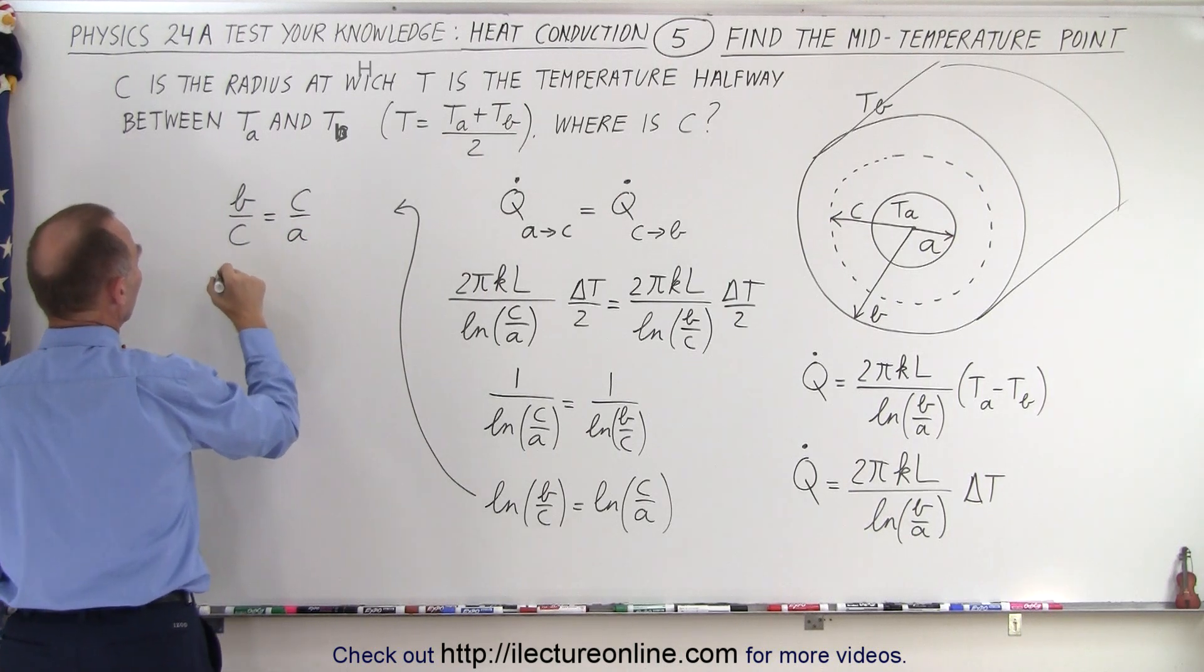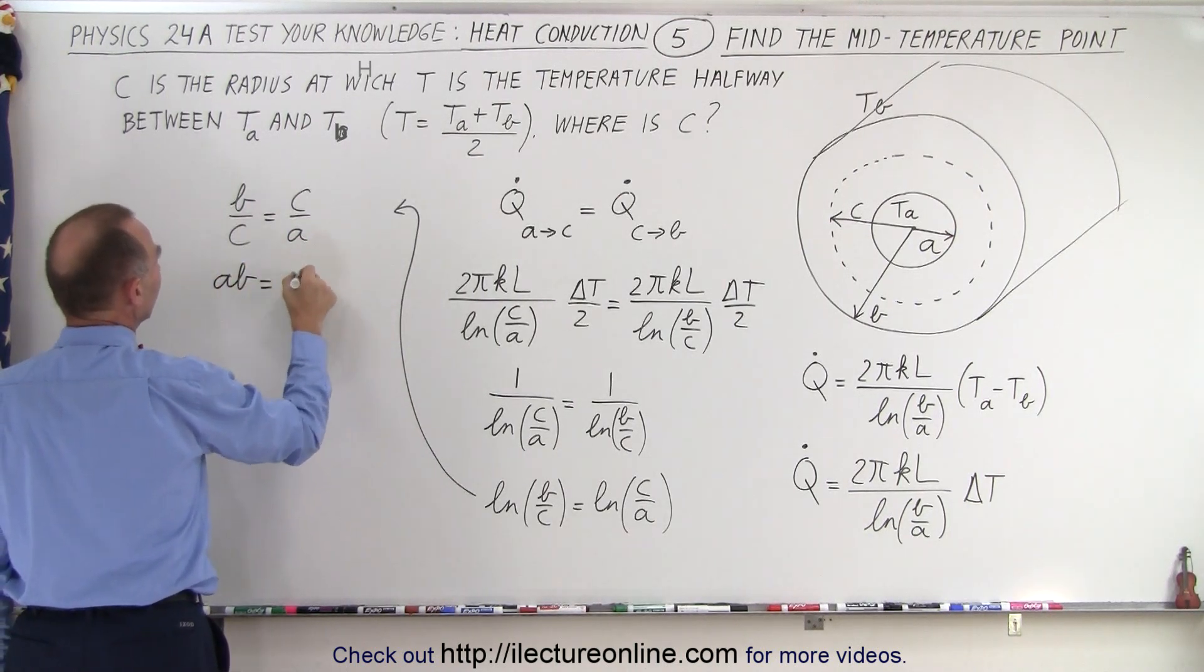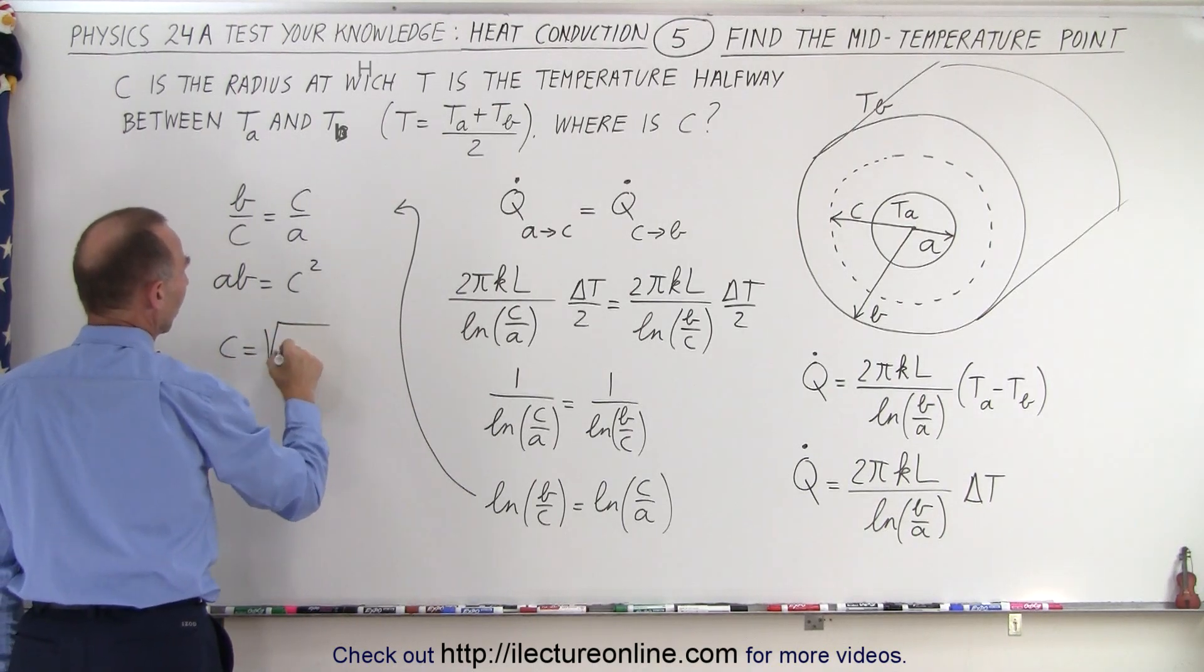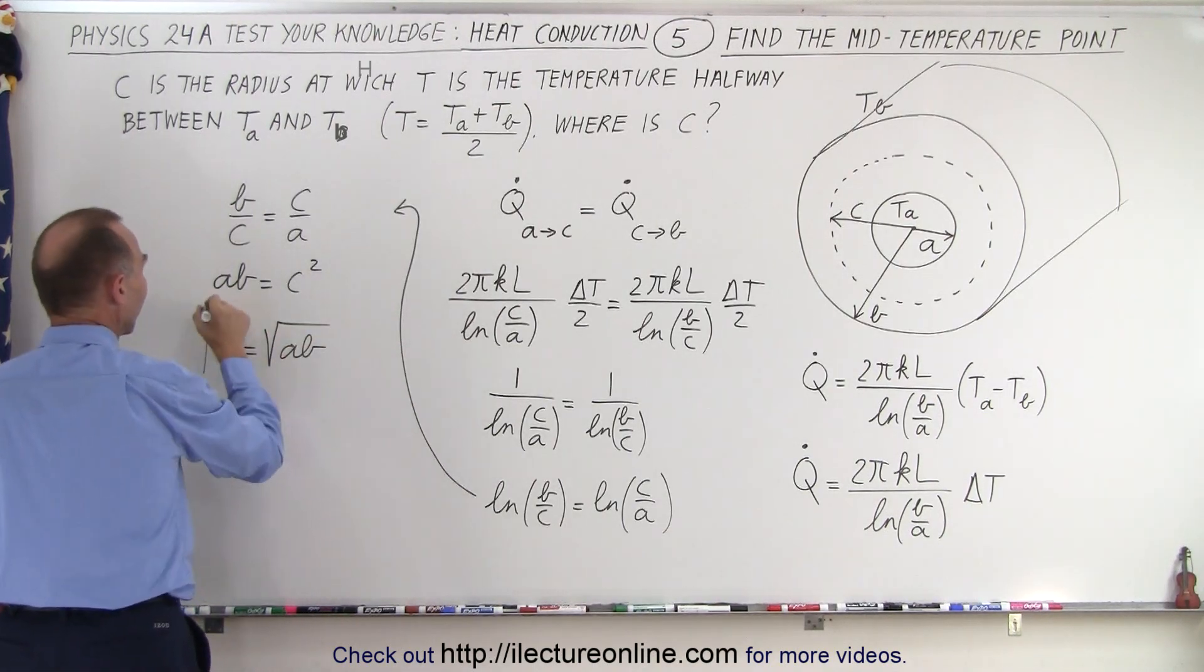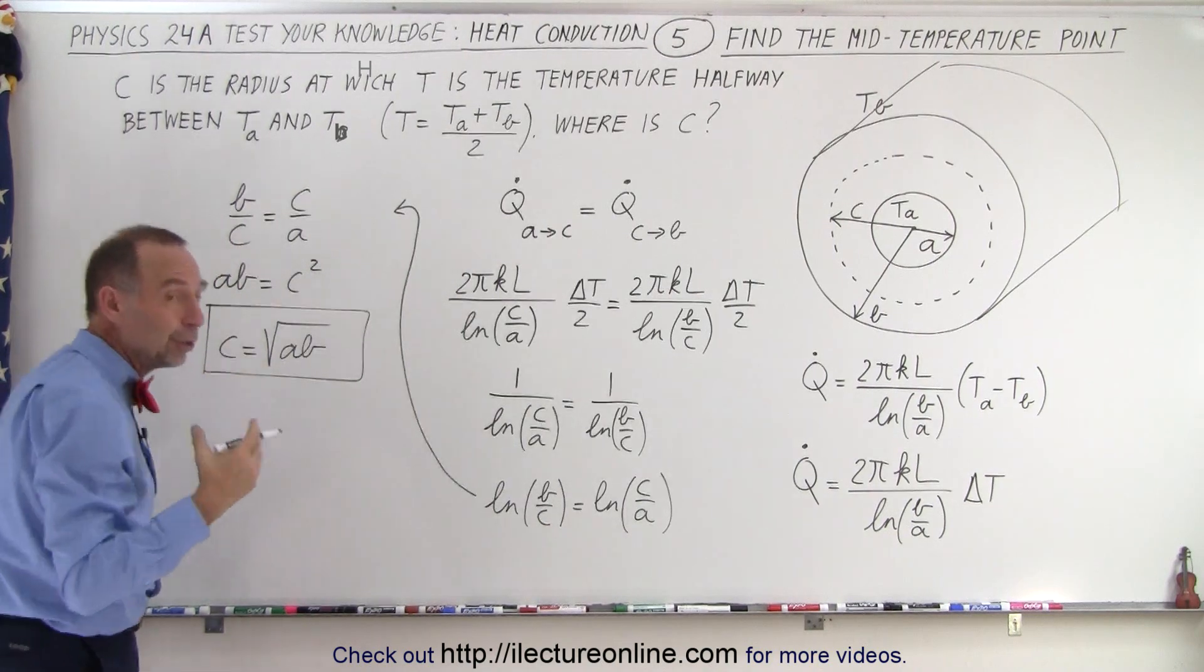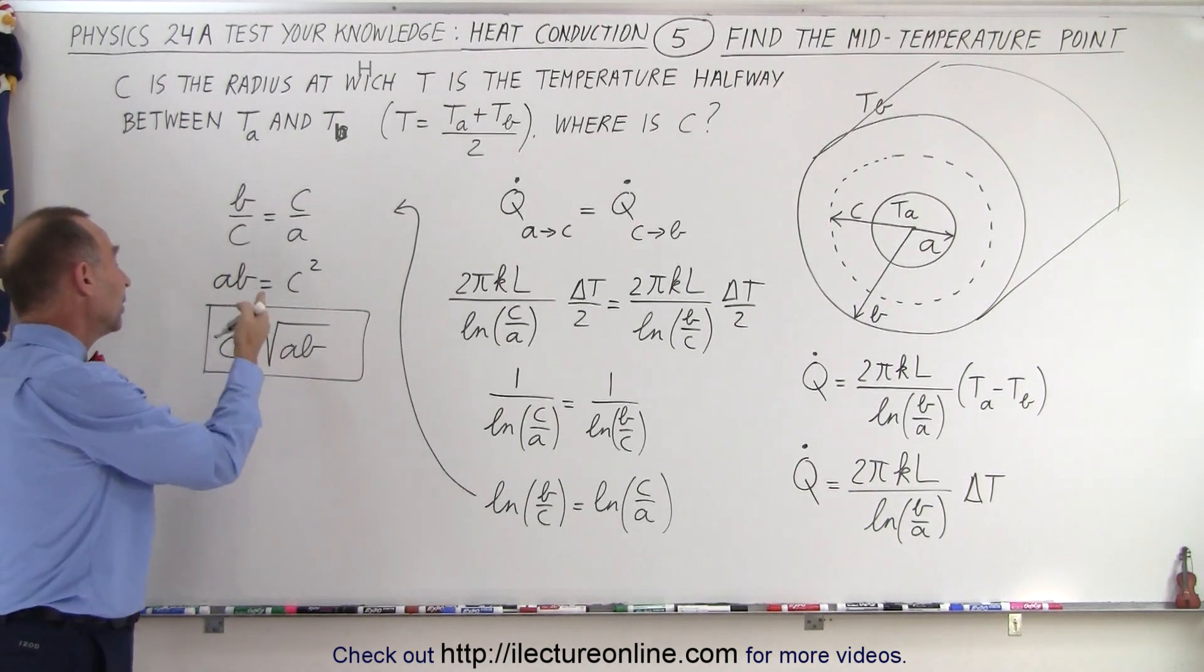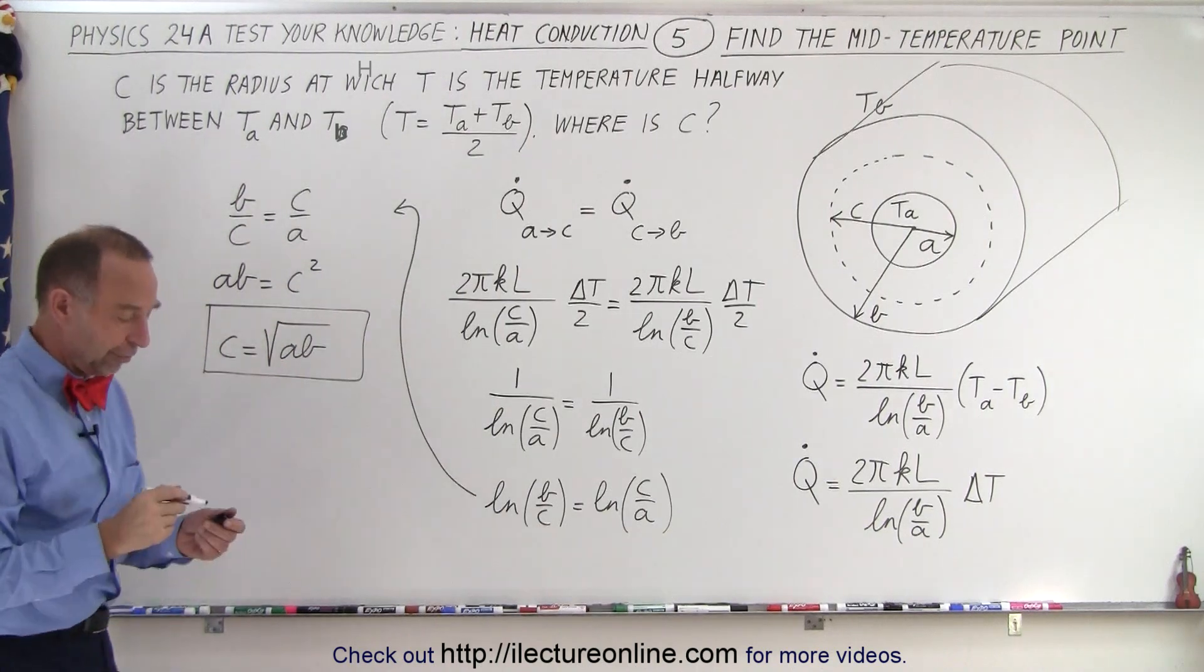And then using cross multiplication, we can say that A times B is equal to C squared, or C is equal to the square root of A times B. And that is what we're looking for. If we know the values for A and B, then all we have to do is multiply them, take the square root, and that is equal to the value of C.